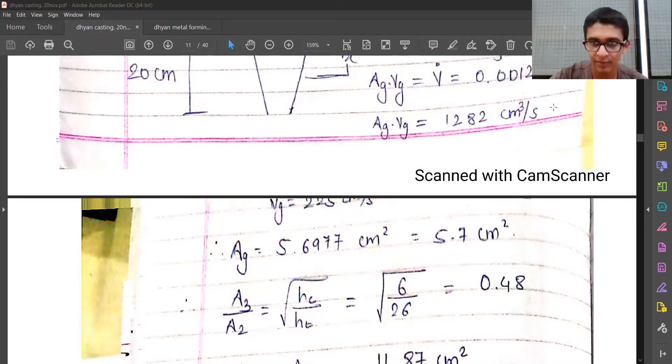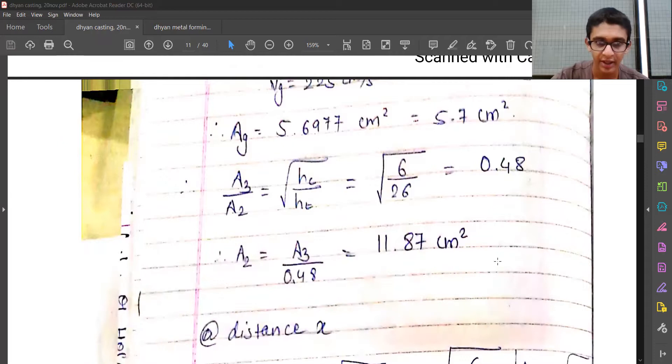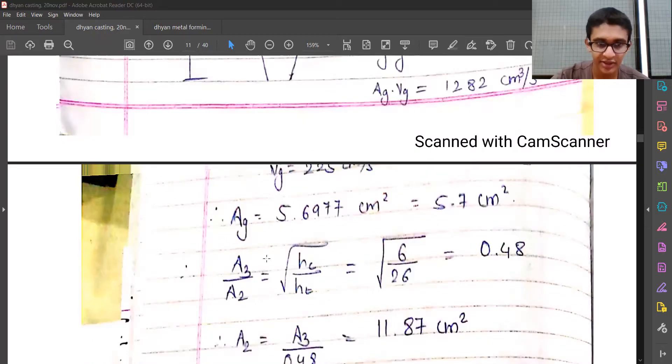And when we use this value in this equation which we have got, the value area ag comes out to be 5.7 centimeters square. And we'll use this area now to figure out a3 by a2 ratio, which is square root of hc by ht, comes out to be 0.48.